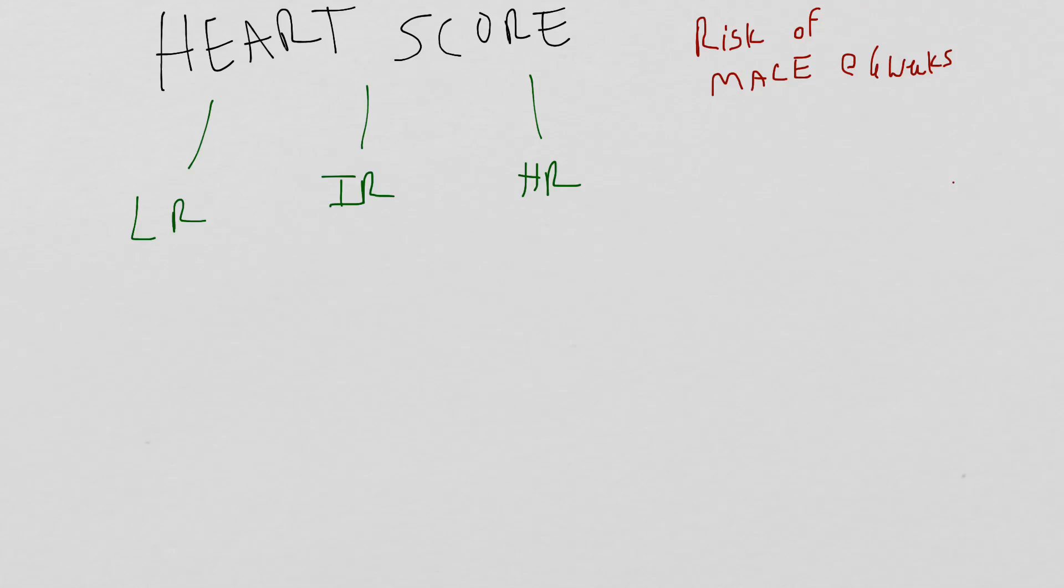This tool allows us to objectively risk stratify patients into low risk, intermediate risk, and high risk for unstable angina. And it also provides us with a disposition decision for our patients. Patients that are low risk can be safely discharged home and have a stress test scheduled within 72 hours of discharge. Whereas patients that are intermediate risk by heart score need to be seen by a cardiologist prior to being discharged and are usually placed in cardiology observation units. And patients that are considered high risk by heart score basically are saying that they have unstable angina and should be admitted to cardiology and treated like unstable angina. And that is how we utilize the heart score.